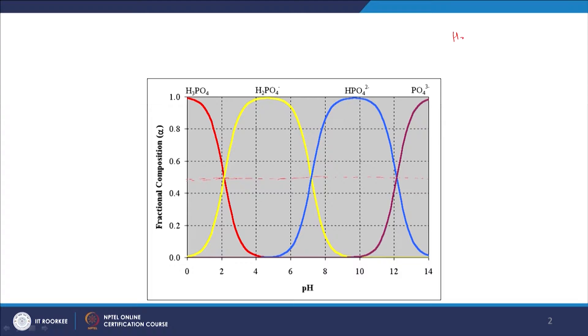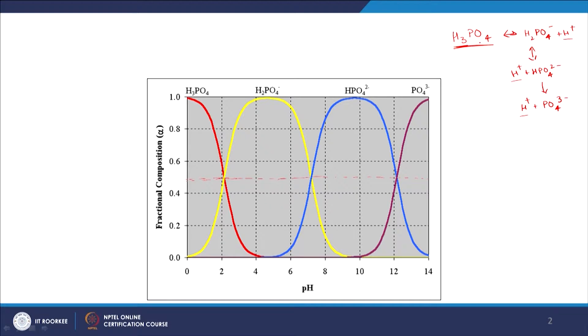We are going to look at the triprotic acid, and the example is H3PO4. It has 3 protons and thus is triprotic. It can dissociate into H2PO4⁻ plus H⁺, then H2PO4⁻ can dissociate into H⁺ and HPO4²⁻, and HPO4²⁻ can further dissociate into H⁺ and PO4³⁻. So it can donate a total of 3 protons depending upon the pH.